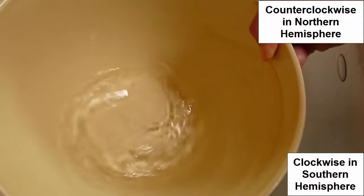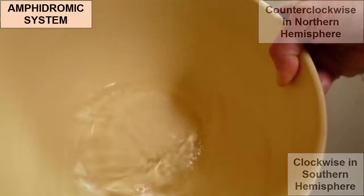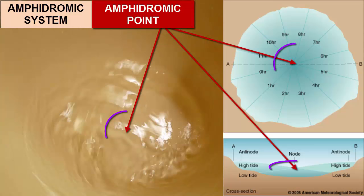We call each ocean basin, around which tides slosh, an amphidromic system. In the center of each bucket of sloshing water, there's a point where the water level doesn't change. We call that the amphidromic point. Around the amphidromic point, the tides rotate once every 12 hours and 25 minutes.